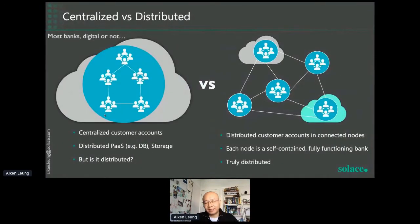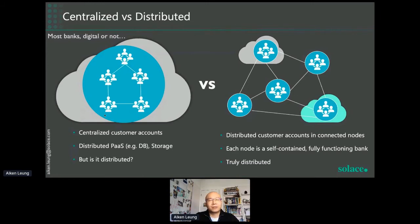First, distributed architecture — it's a very general term. Distributed versus centralized: from a banking perspective, centralization means having one big database containing all your bank accounts, whether that's 1 million, 20 million, or 200 million records. Most banks nowadays, digital or not, have a similar centralized model — even if they use distributed database or distributed storage, you still have one lump of records containing all the customer data.